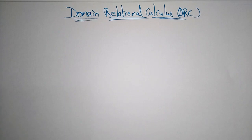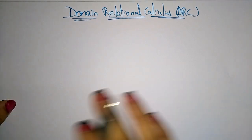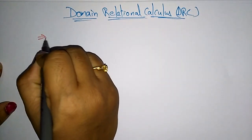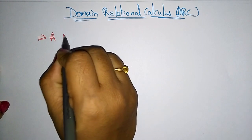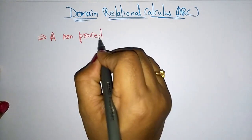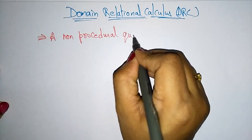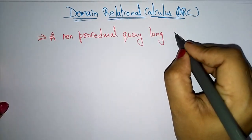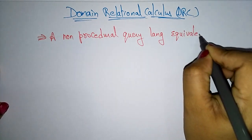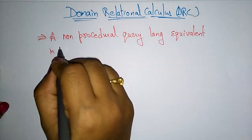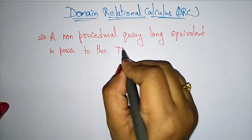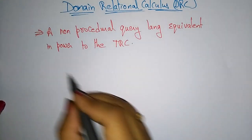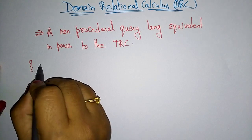Let us continue with the relational calculus. In the previous video I explained about the tuple relational calculus. Now let us see what is the domain relational calculus. This domain relational calculus is a non-procedural query language, just like TRC, and equivalent in power to the tuple relational calculus.